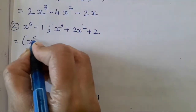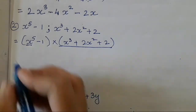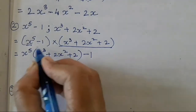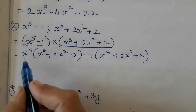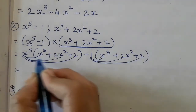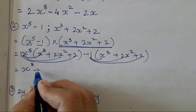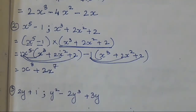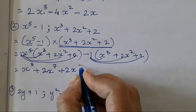Let's move on to the next one: x⁵ minus 1 multiplied with x³ plus 2x² plus 2. First term you all have to multiply with the complete bracket — so x⁵ into x³ plus 2x² plus 2 — then minus 1 into the complete bracket. Now multiply: x into x — 5 plus 3 is 8, so x⁸. Then 1 into 2 is 2, 5 plus 2 is 7, so plus 2x⁷. Then x⁵ into 2 is going to be 2x⁵.